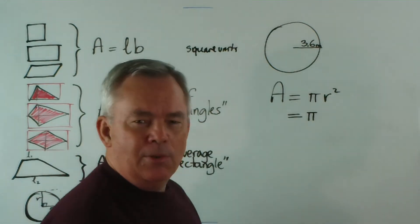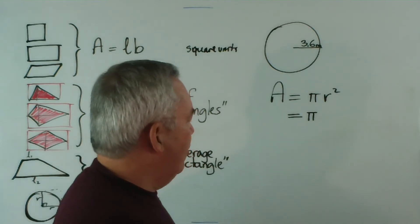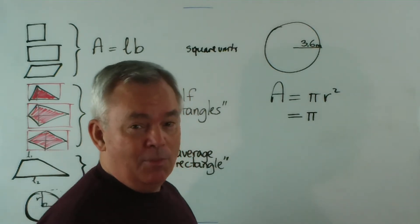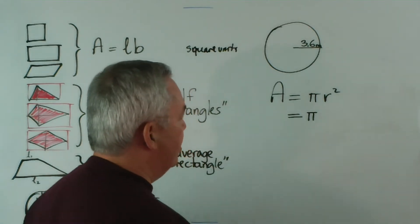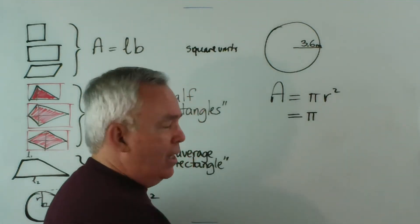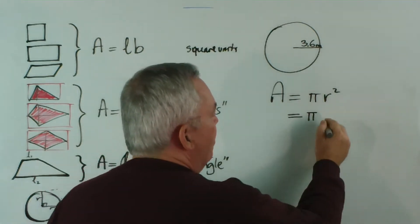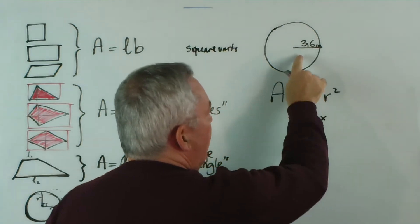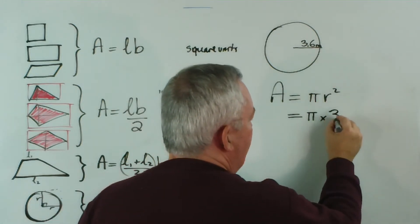Now, there's no need to substitute for pi. Your calculator knows the value of pi to quite a few decimal places. You could replace it with 22 over 7, or 3.14, which are not exactly the value of pi, just very close approximations. But I'm going to use my calculator, so I'll leave the pi and I'm going to multiply it by this 3.6 squared.